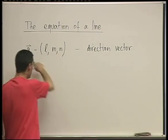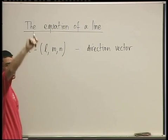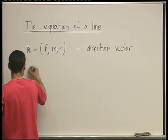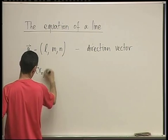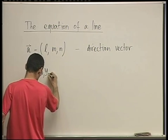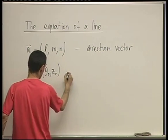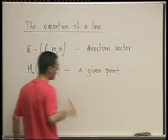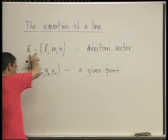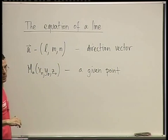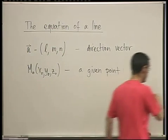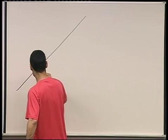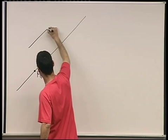And I don't care at all about its length. The line doesn't see the length of the direction vector, because the line is infinite. And the given point is x0, y0, z0. We want to find the equation of a line in the direction of a, which goes through the point x0, y0, z0. So the picture that we want is: here's the line, and here's the point M0, and the direction vector is something like this.